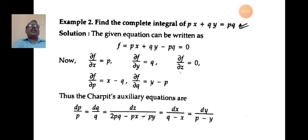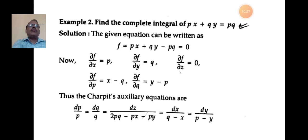Problem 2: Find the complete integral of px + qy = pq. Rewriting: px + qy − pq = 0, so f = px + qy − pq = 0. Differentiating: ∂f/∂x = p, ∂f/∂y = q, ∂f/∂z = 0 (no z term), ∂f/∂p = x−q, ∂f/∂q = y−p.